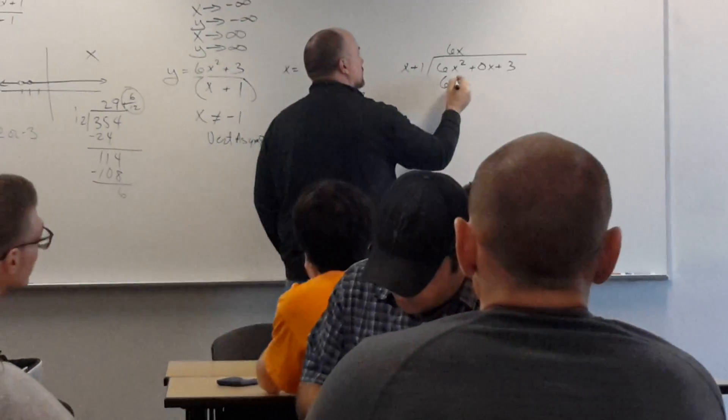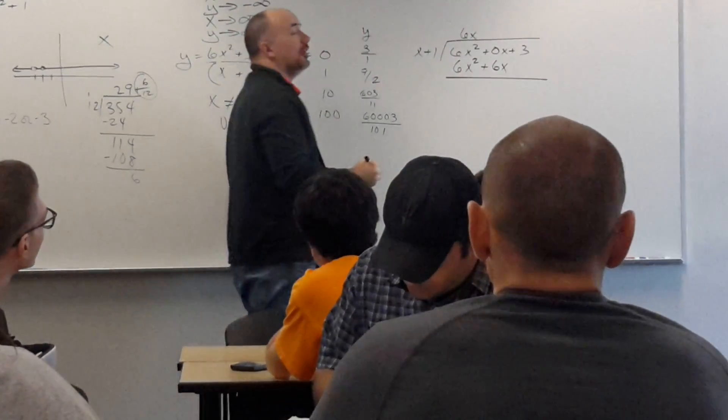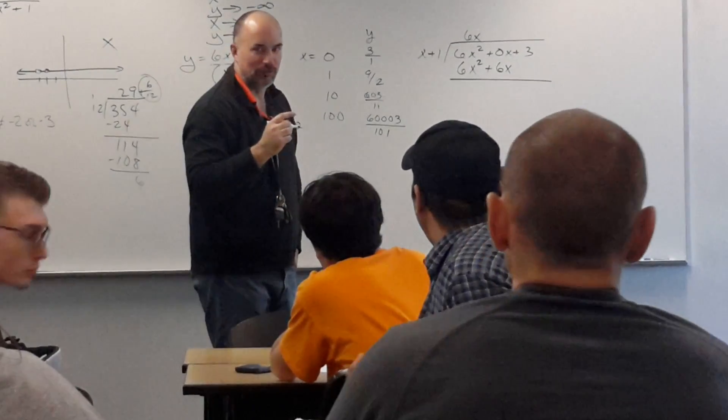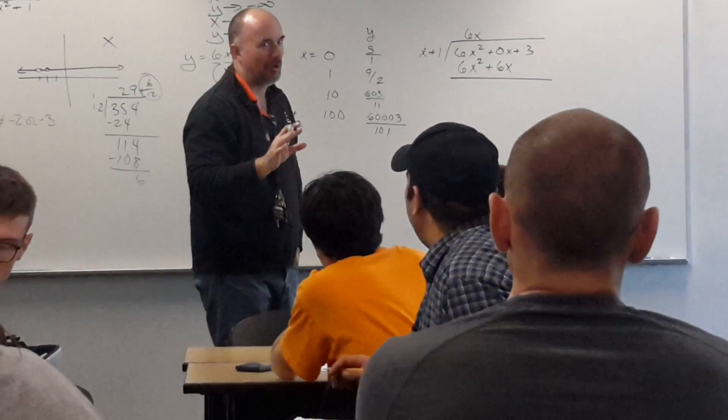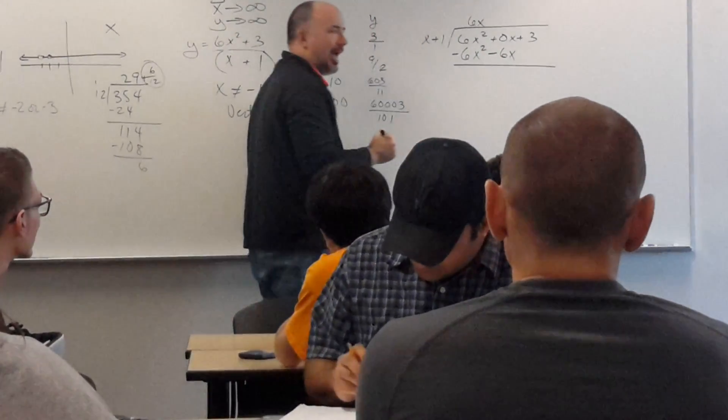Now multiply. You get 6x squared plus 6x. Now, subtract. We don't call it subtraction. We call it change the signs and add.